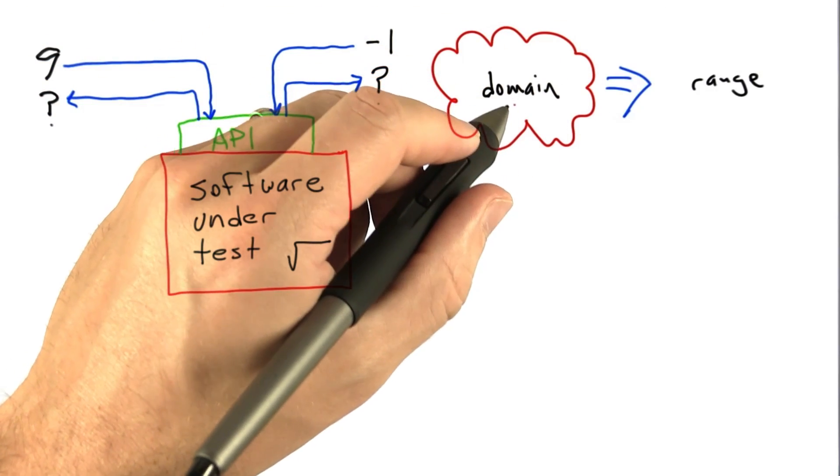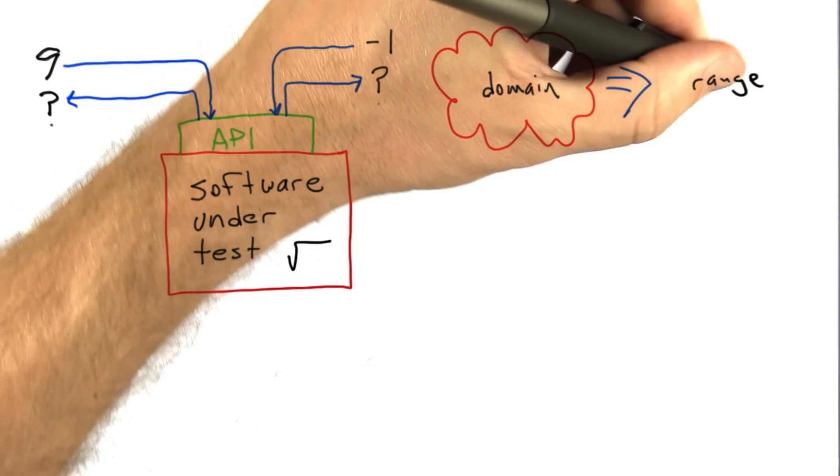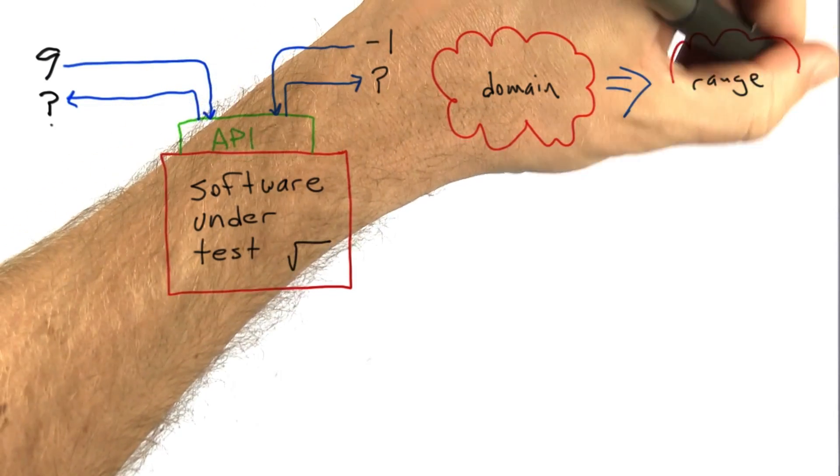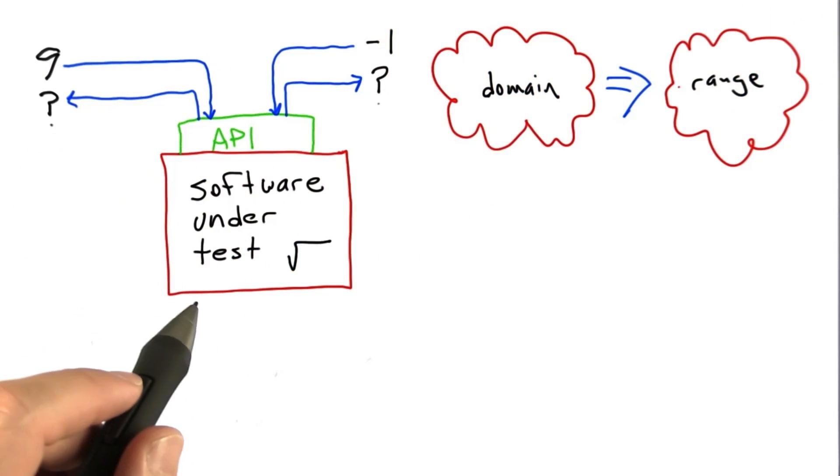Correspondingly, every piece of software also has a range - the set of possible outputs. Let's look at what the domain and range are for the square root function.